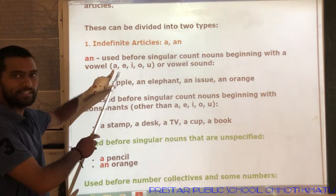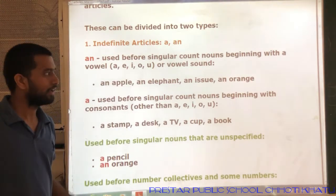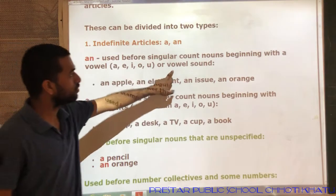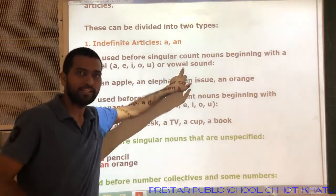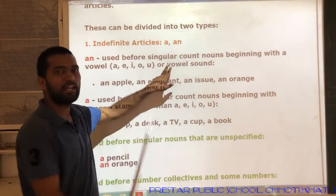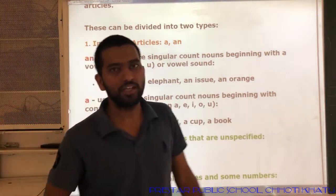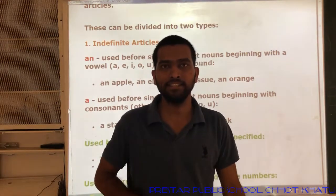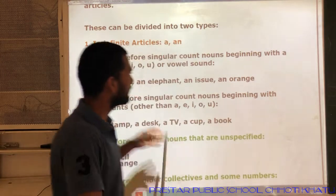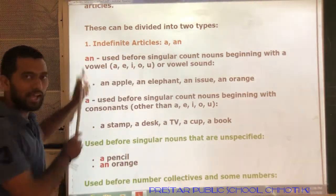When there is a consonant with a vowel sound, we use the article 'an'. How can a consonant have a vowel sound? For example, if we take the word 'honest' — honest has a vowel sound at the start. So for this type of word, before it we use the article 'an'.